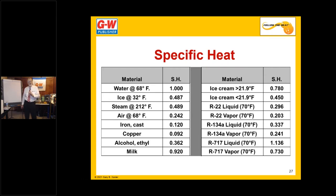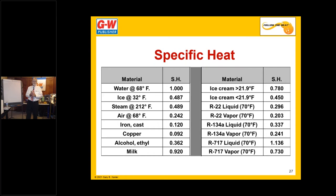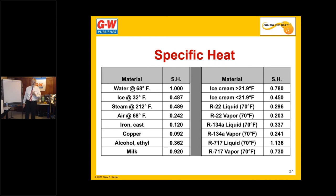If we were designing refrigeration equipment to cool chocolate as it's being made, or to cool milk, we would have to calculate the specific heat of the product we want to cool. But for field work, just remember that liquid is better than vapor for heat transfer. And the best heat transfer we get is during the change of state from liquid to vapor or vapor to liquid. Liquid is better than vapor — it always has been, it always will be. That's what we want to remember about specific heat.